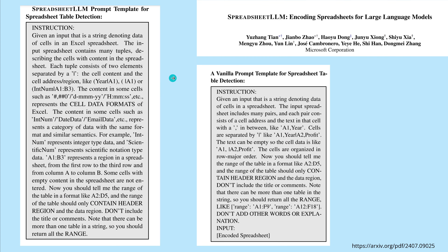Now this new Spreadsheet LLM prompt template for spreadsheet table detection from the Microsoft publication is as follows. Given the input that is a string denoting data of cells in an Excel spreadsheet — note, you have to have an Excel spreadsheet, not just a PDF. The input spreadsheet contains many tuples describing the cells, each tuple consisting of two elements separated by a vertical dash.